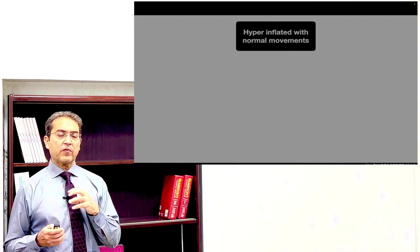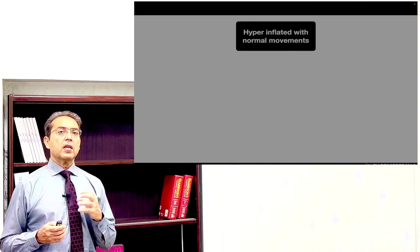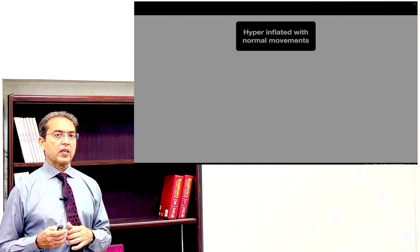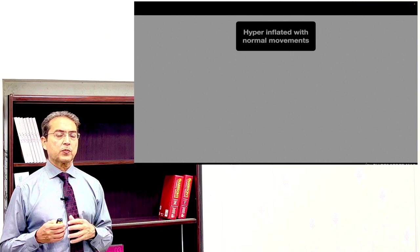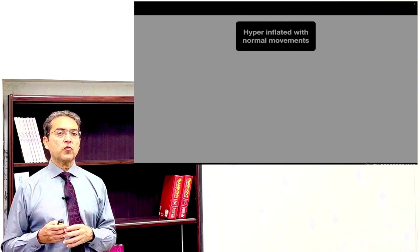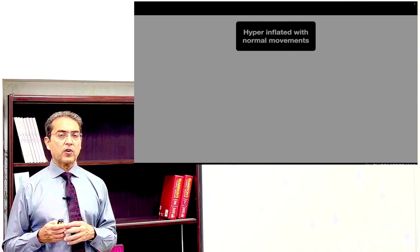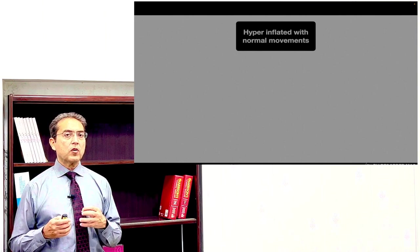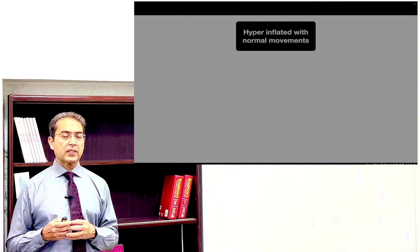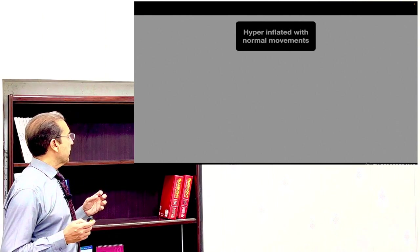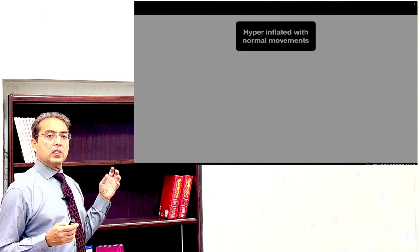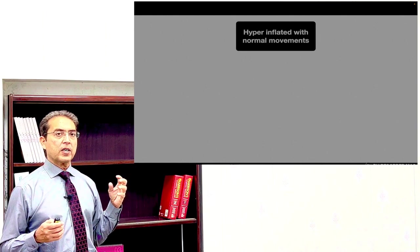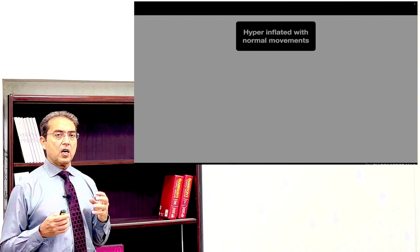In COPD, lung compliance is affected. But in patients with asthma, lung compliance is not affected; therefore, they have normal chest expansion. Especially in acute phases the chest may be very hyperinflated, but when asthma is in control, you may not find any abnormalities. The patient may appear normal if asthma is controlled. During asthmatic attacks, the chest is hyperinflated but still shows very good excursion.